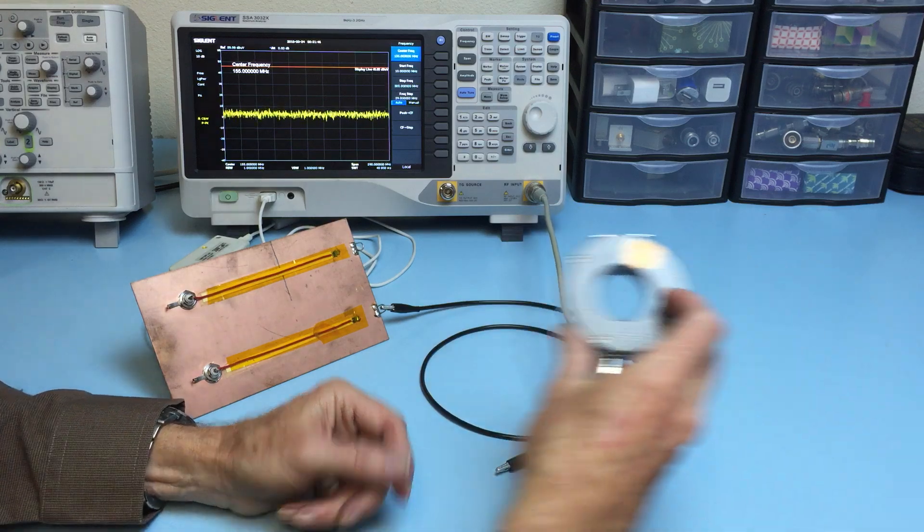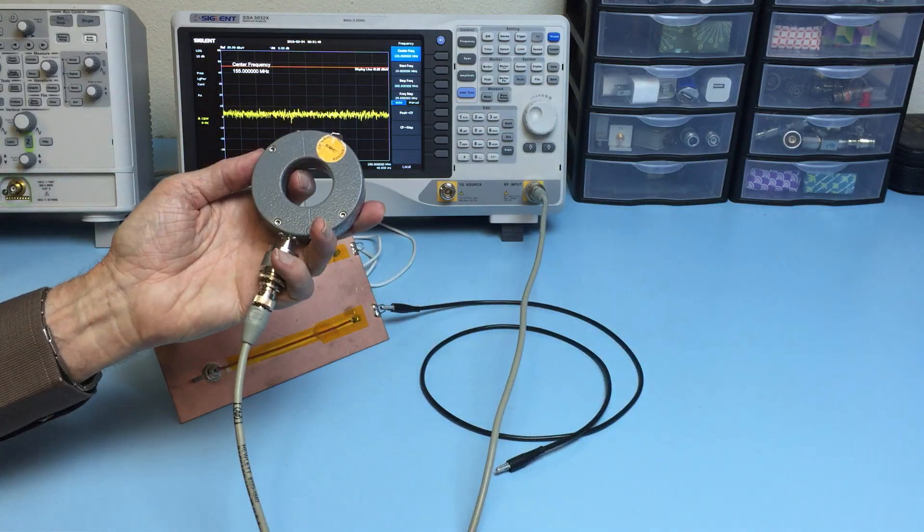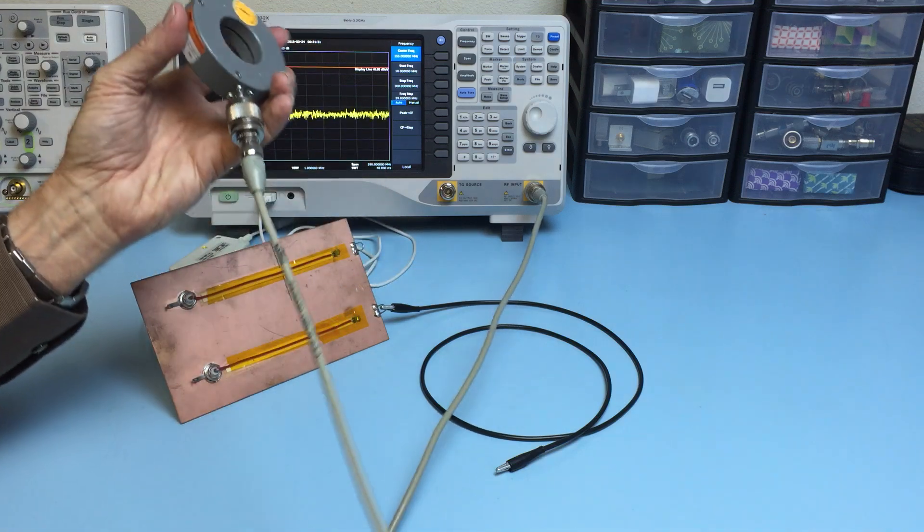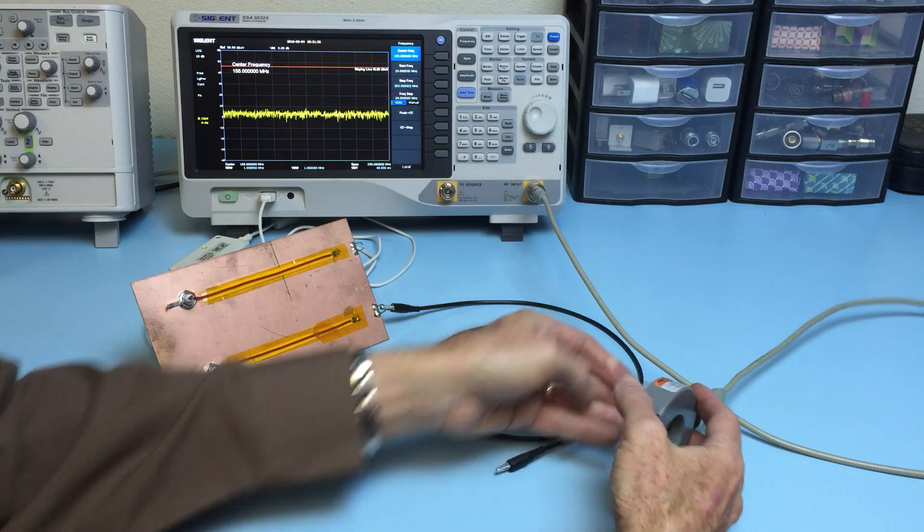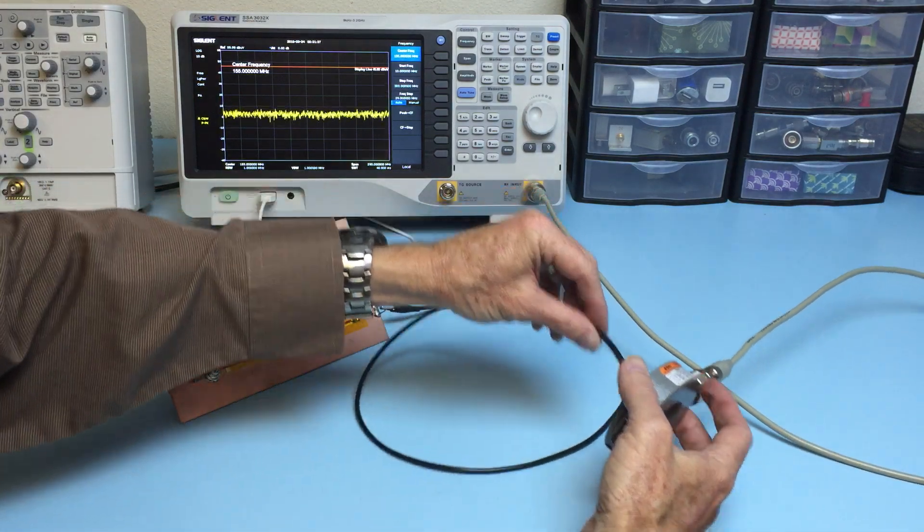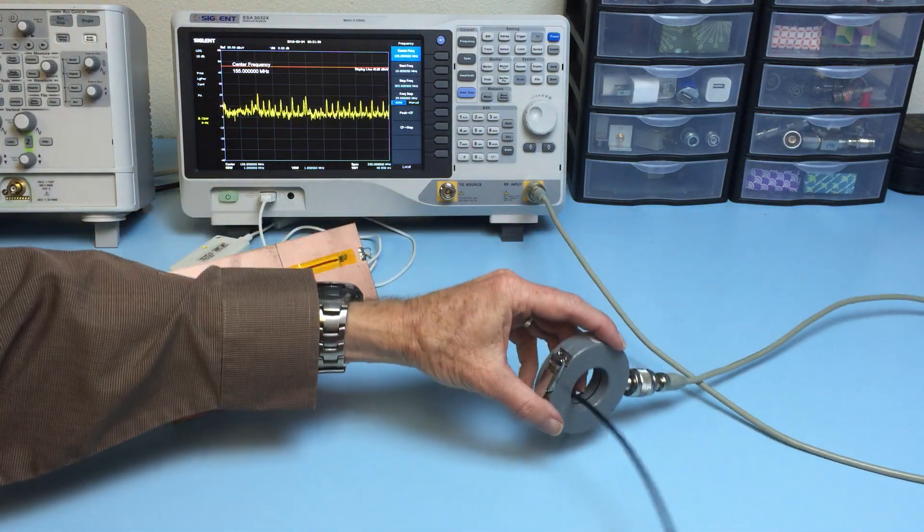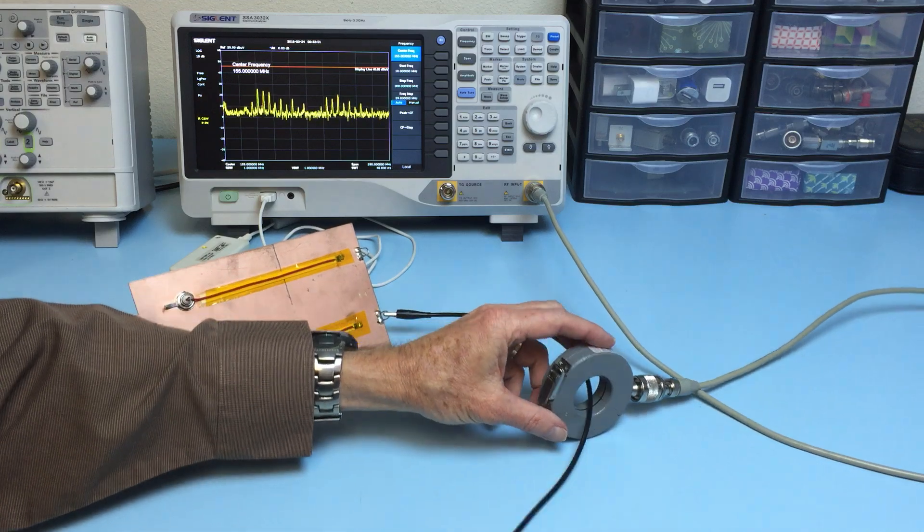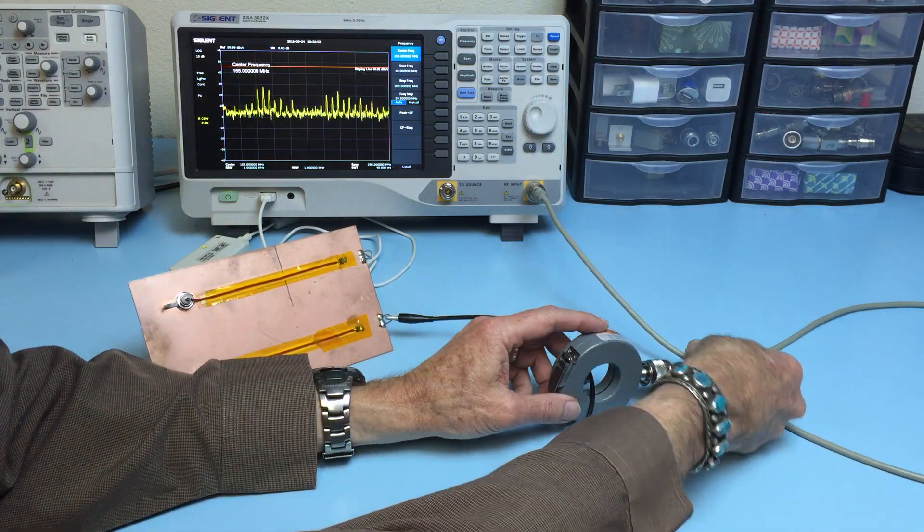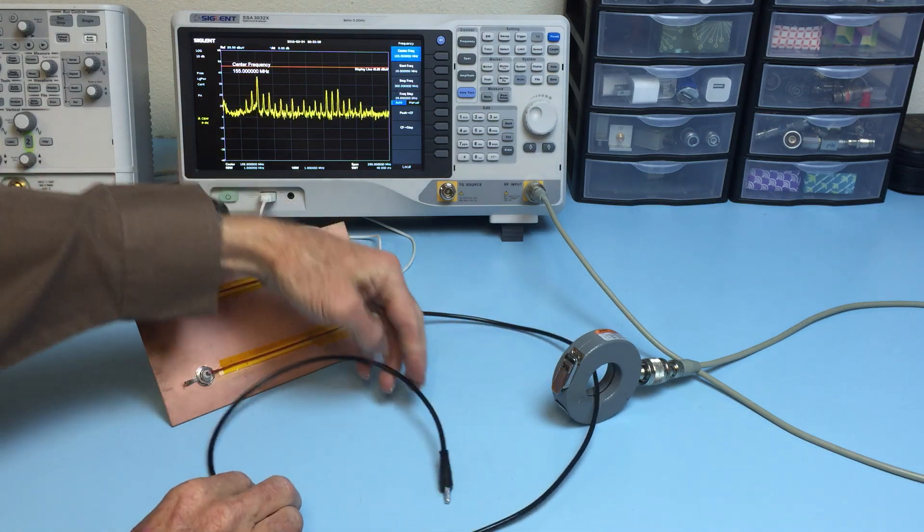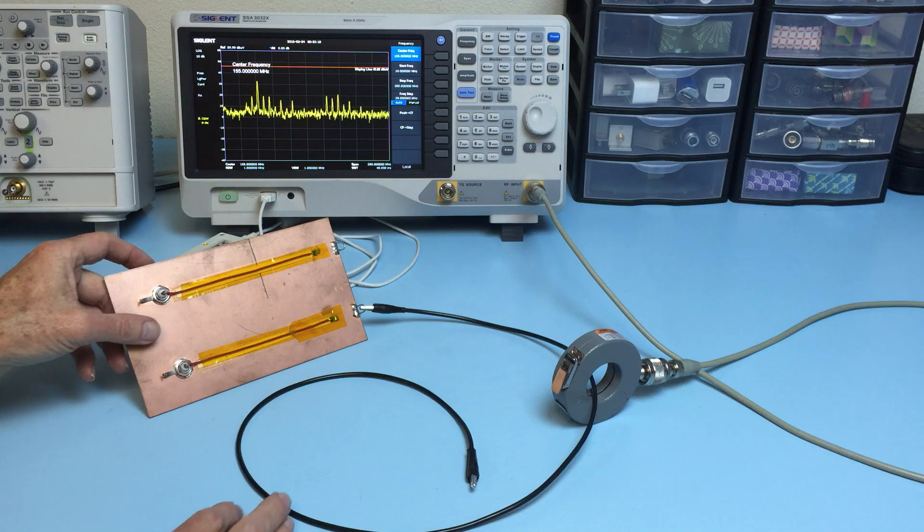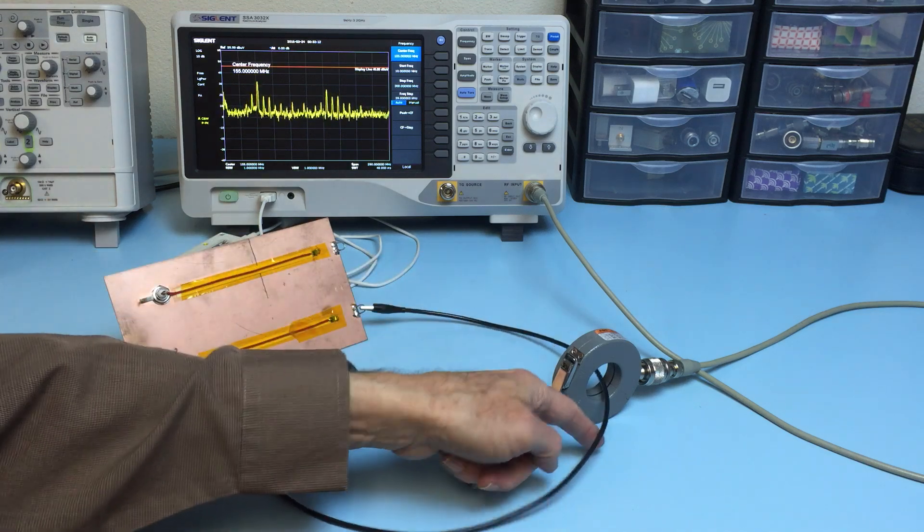Now we'll be talking about current probes in a module coming up. But these are very good tools to use. So I'm going to put the wire through the current probe. Current probes are designed to measure very small amounts of current on the order of microamps.